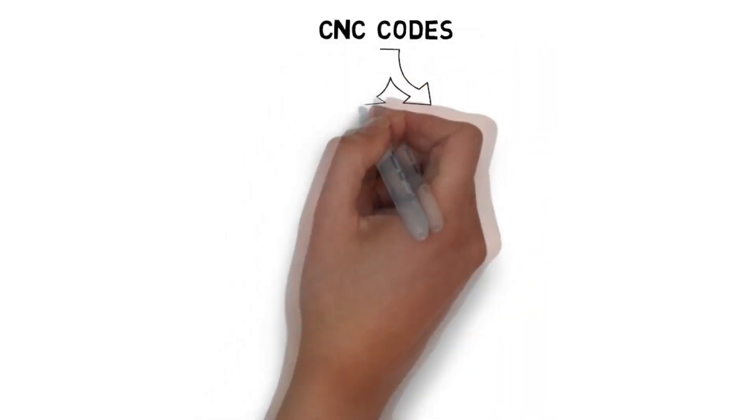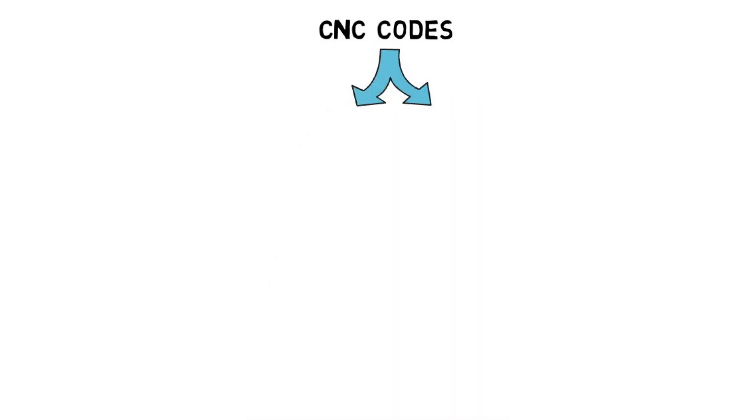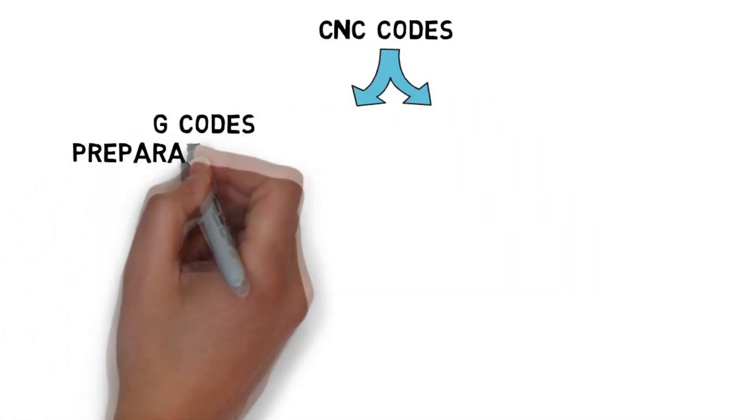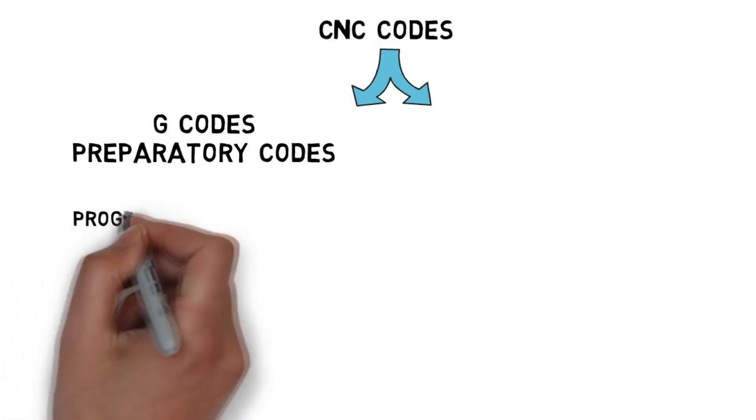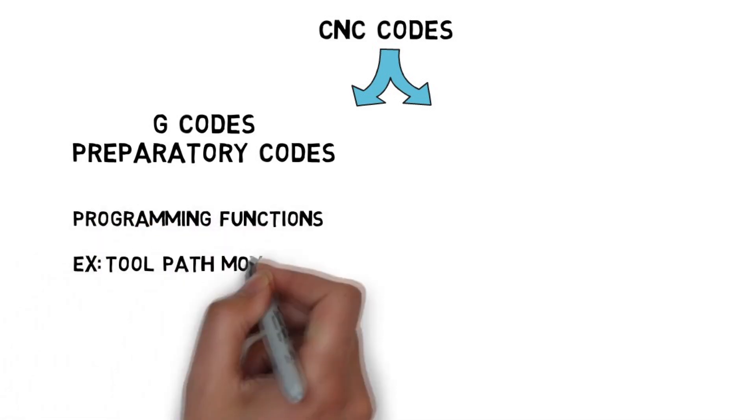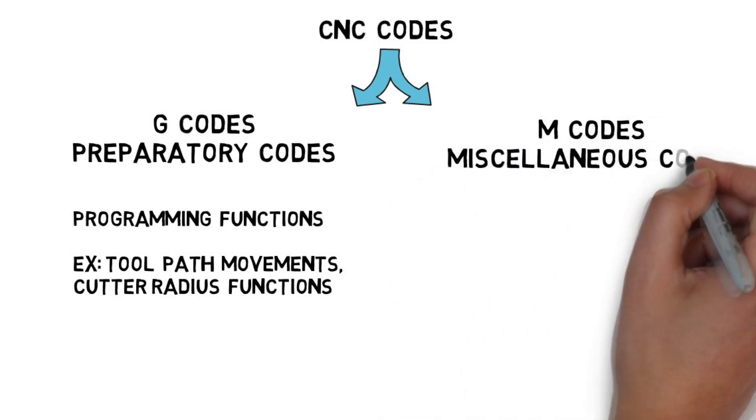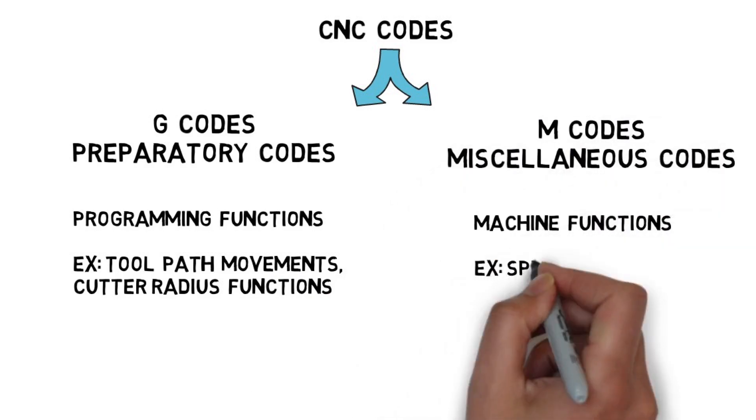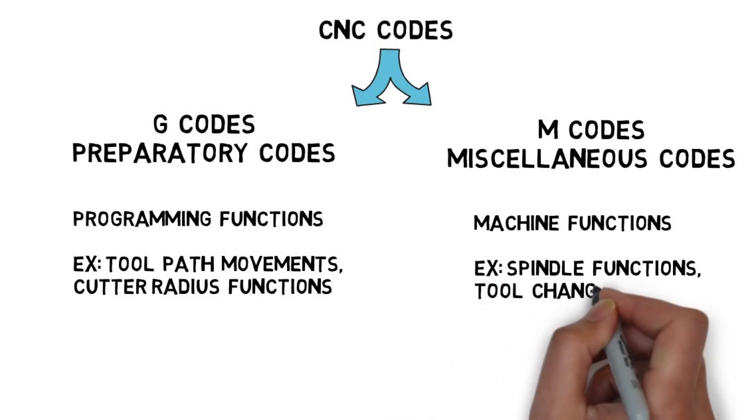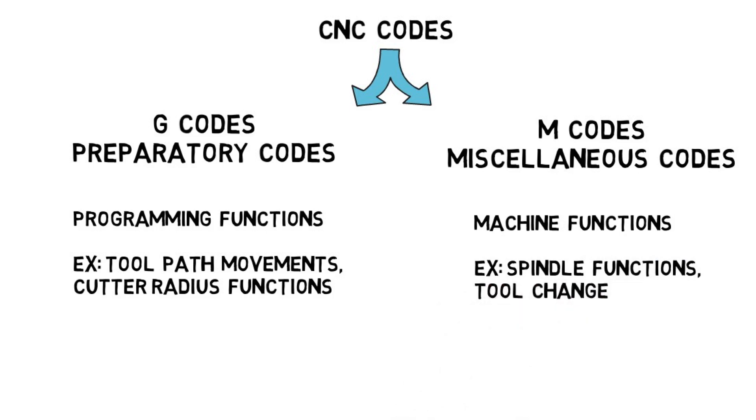The CNC codes are generally two types: G codes and M codes. G codes are the preparatory codes which are used for programming functions, and M codes are the miscellaneous codes which are used for machine functions. Here, we will explain the essential CNC codes which you can start with for basic programming.